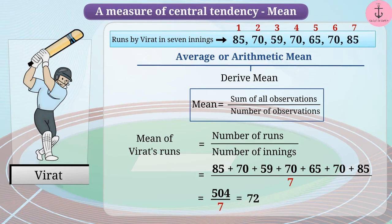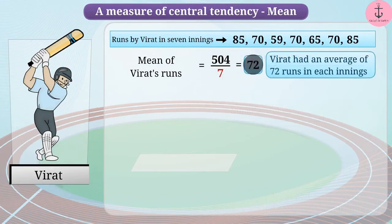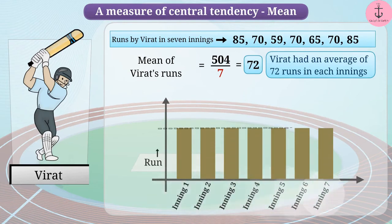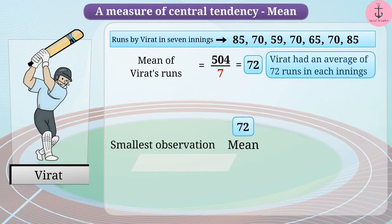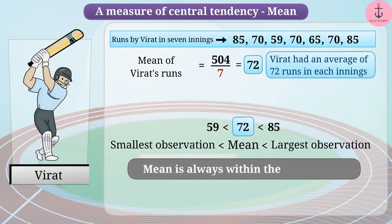We deduce that the mean of Virat's number of runs from the data provided is 72 runs. That is, Virat had an average of 72 runs in each innings. The mean derived tells us that if Virat had scored equal runs in each innings, he would have scored as many as 72 runs in each innings. We see that 72 is located between the smallest observation 59 and the largest observation 85. It can be generalized that mean is always within the data range.